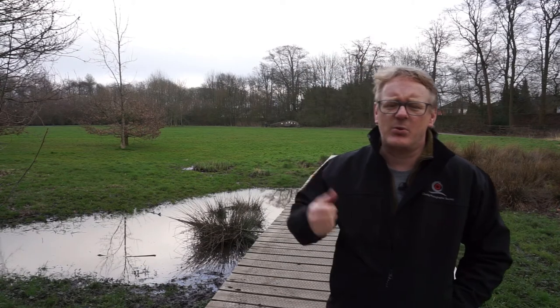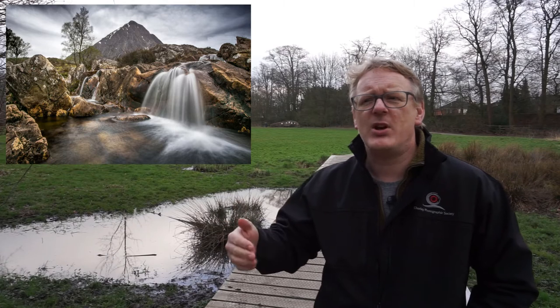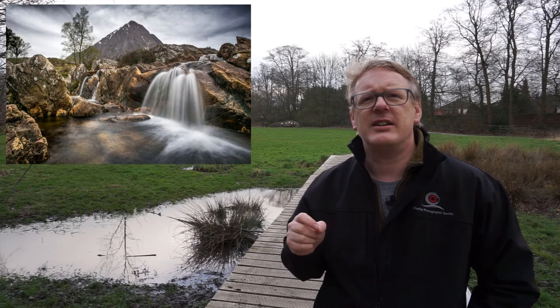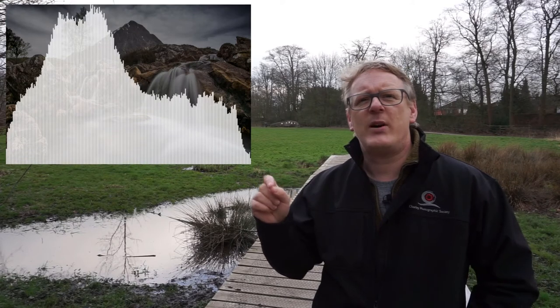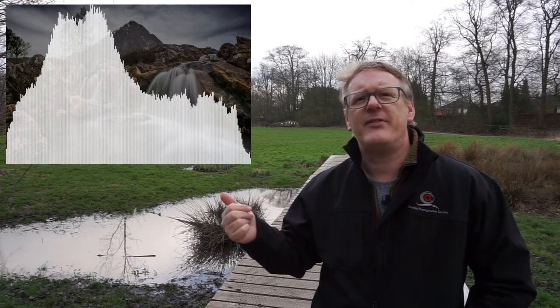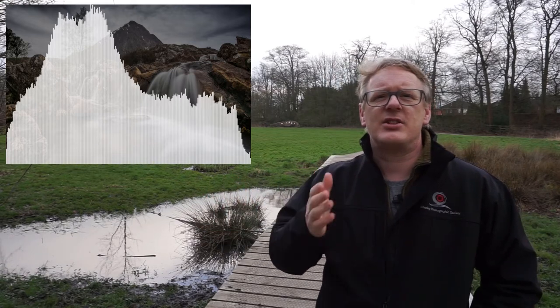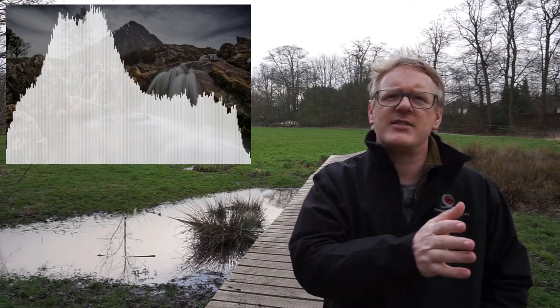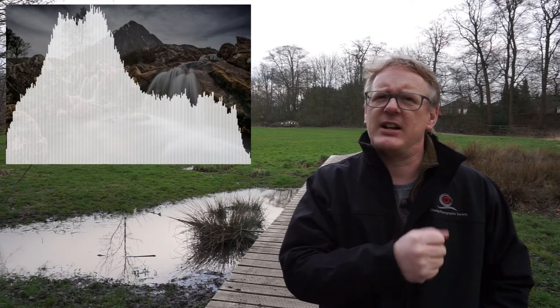Let's pick another example — maybe a little bit easier to understand. This is a waterfall in Glencoe, up in Scotland. This waterfall has got some very white areas — the water coming over the edge is very white and very bright. There are a few highlights in the sky but it's quite a dark sky. When we overlay the histogram, we can see quite a lot of vertical lines at the very far right corresponding to the water, and as we move left there are lots of lines through the mid tones and into the dark areas.